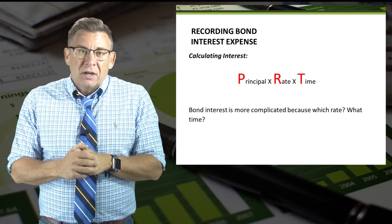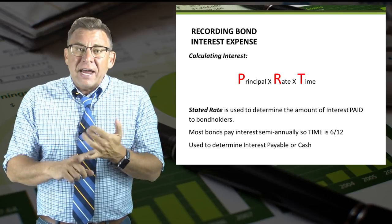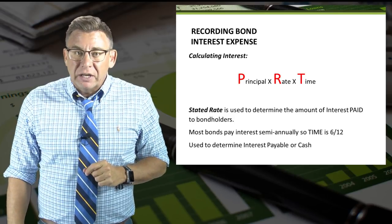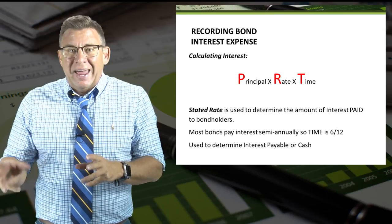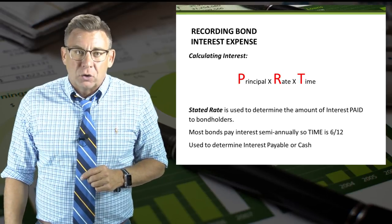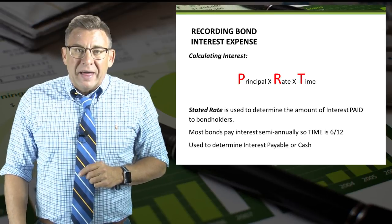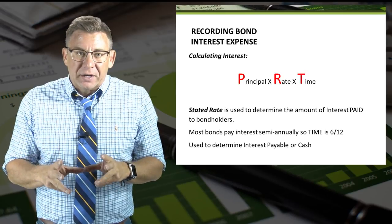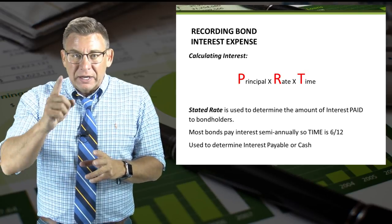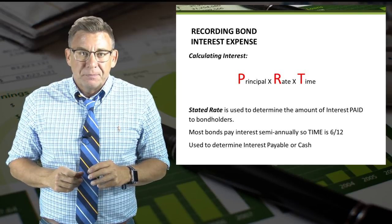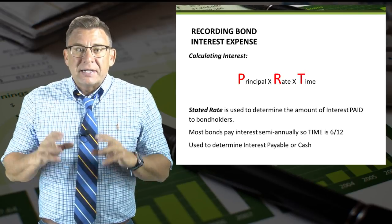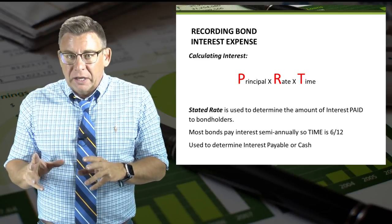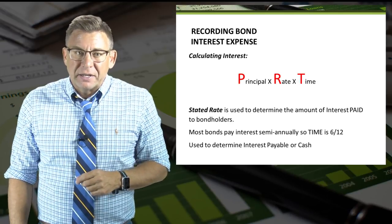Let's find out. The stated rate is the interest rate we use to calculate the amount of interest paid to the bondholders. That is the interest rate stated on the face of the bond, and really it's its only purpose. Since most bonds pay interest semi-annually, time is six months.